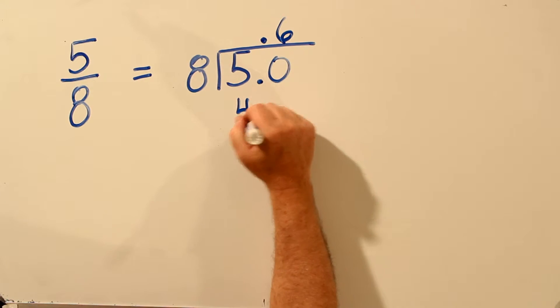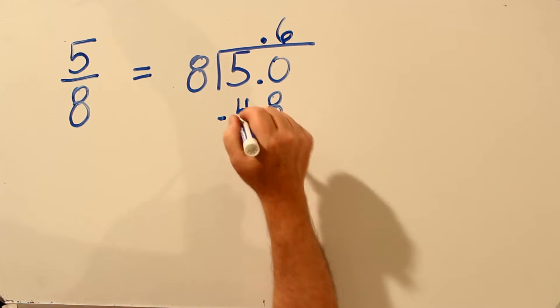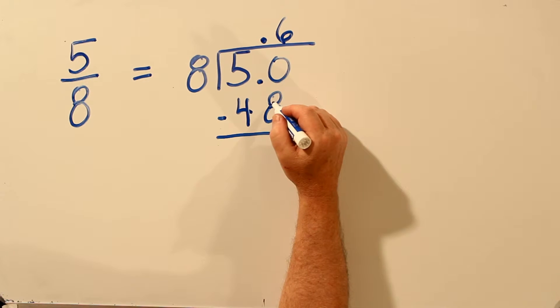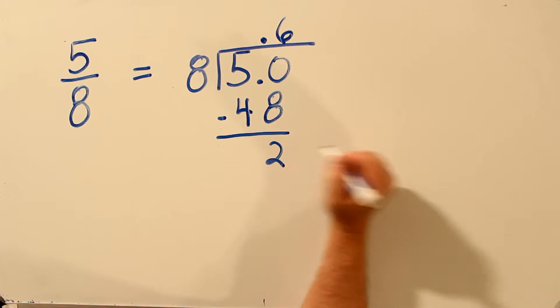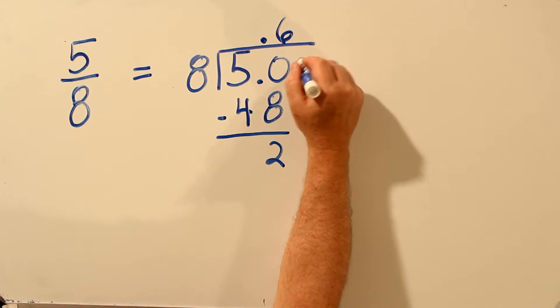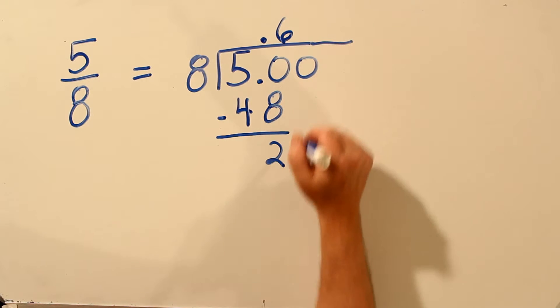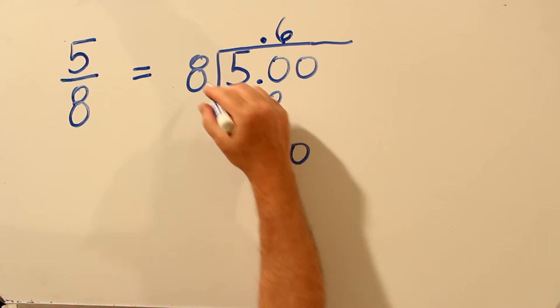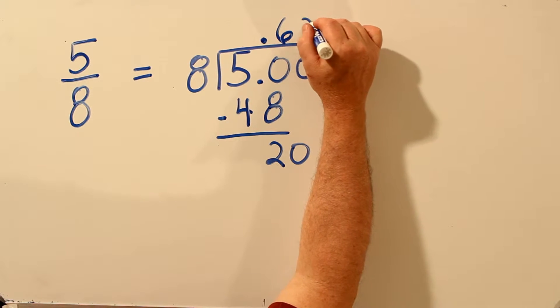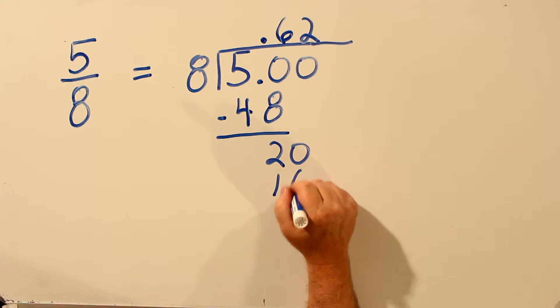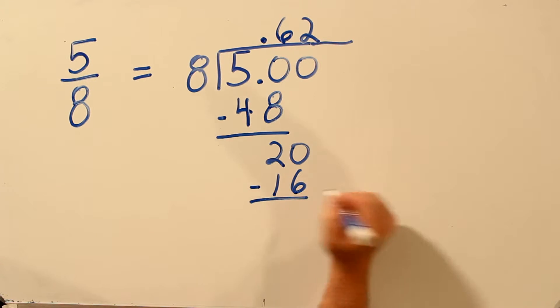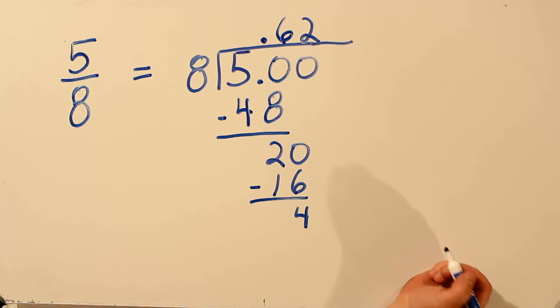And 6 times 8 is 48. Subtract 48 from 50, leaves 2. Add another 0. 8 does go into 20, 2 times. 2 times 8 is 16. Subtract 16 from 20, 4.